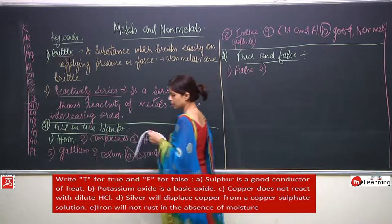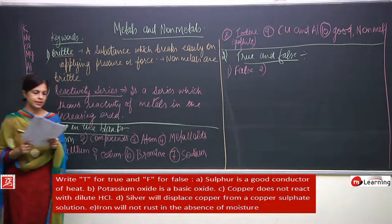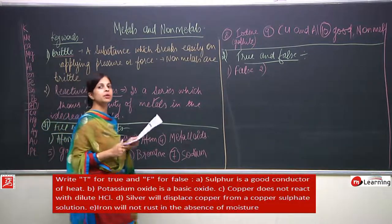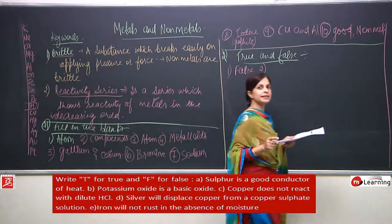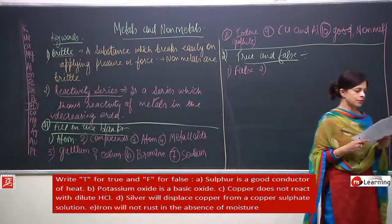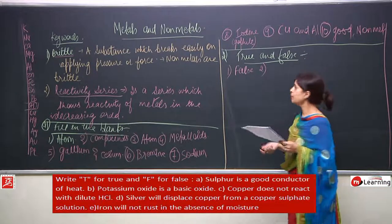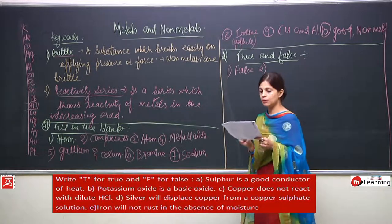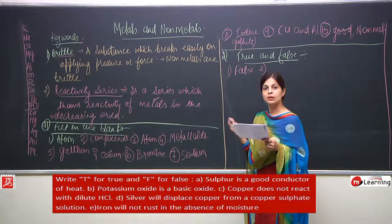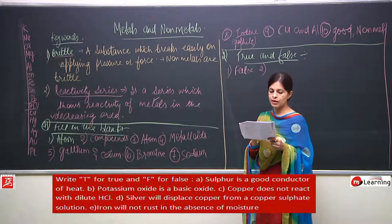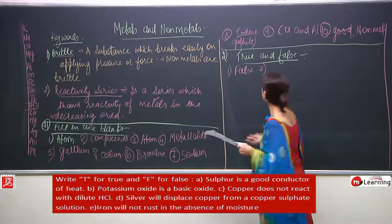Second: potassium oxide is a basic oxide. Potassium is a metal, and metals form basic oxides. So potassium oxide is indeed a basic oxide — the answer is true.